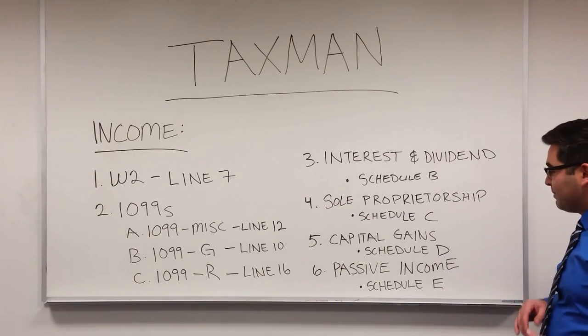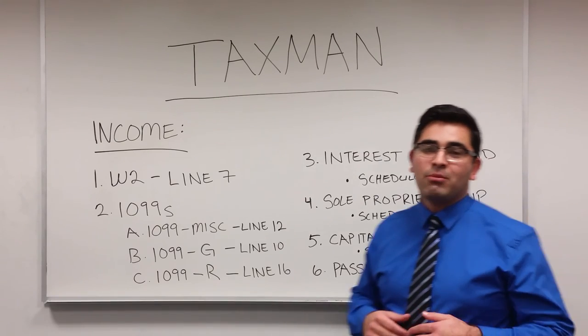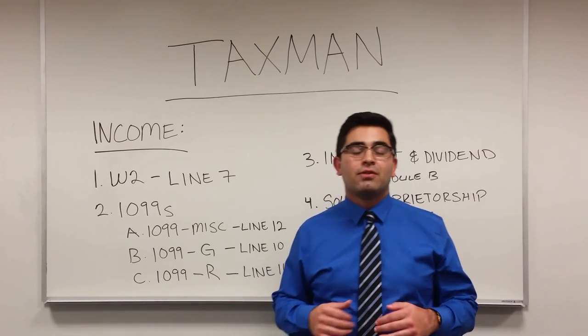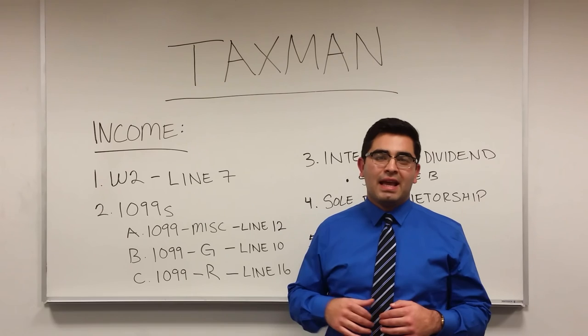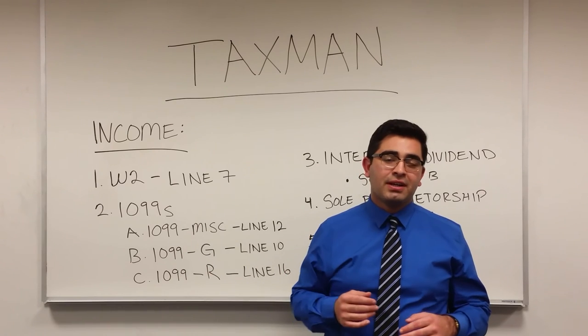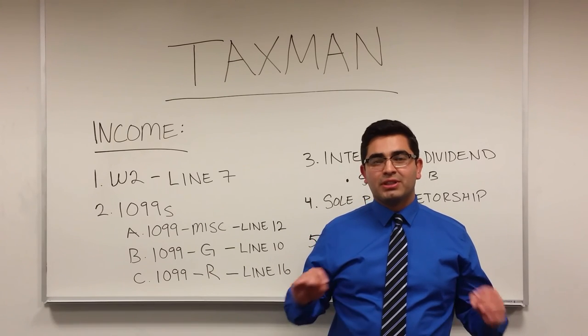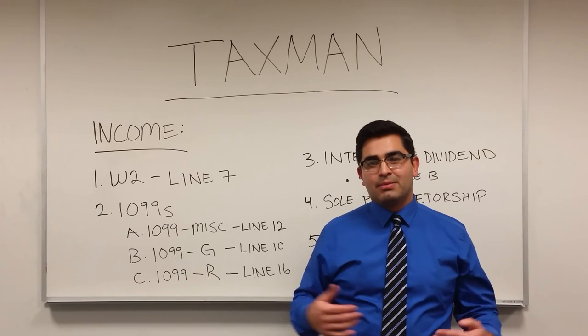Number six is passive income. An example of passive income would be a rental property. If you own a rental property and receive rental income throughout the year, then that will be reported on Schedule E of the 1040 income tax return.